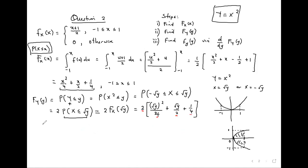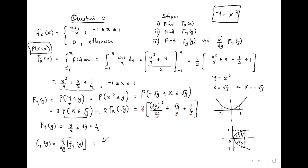After the correction: F_Y(y) = y/2 + √y + 1/2. Now differentiate to find the PDF: f_Y(y) = d/dy [F_Y(y)] = 1/2 + (1/2)·y^(-1/2), which simplifies to 1/2 + 1/(2√y), for 0 ≤ y ≤ 1.